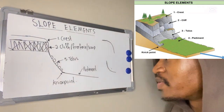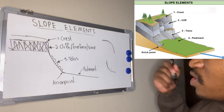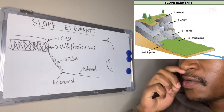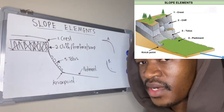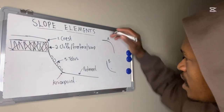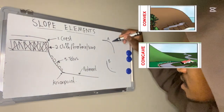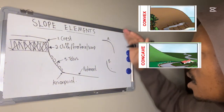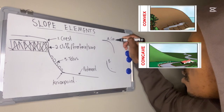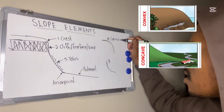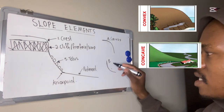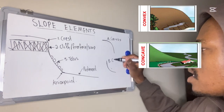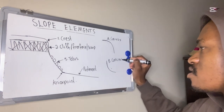Before we go to these slope elements, you need to know the difference between slope A and slope B. We have something known as a convex slope and a concave slope. If you look at slope A, you can see that it curves outwards — we call that a convex slope. And slope B curves inwards — we call that a concave slope.